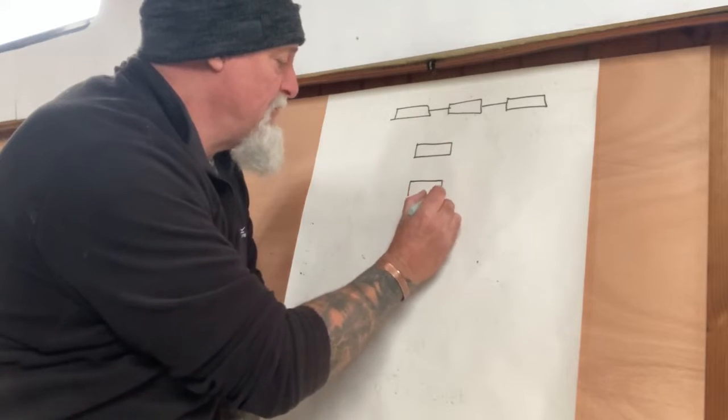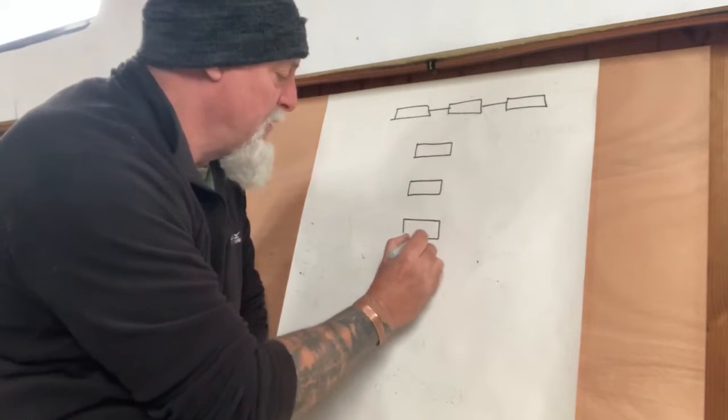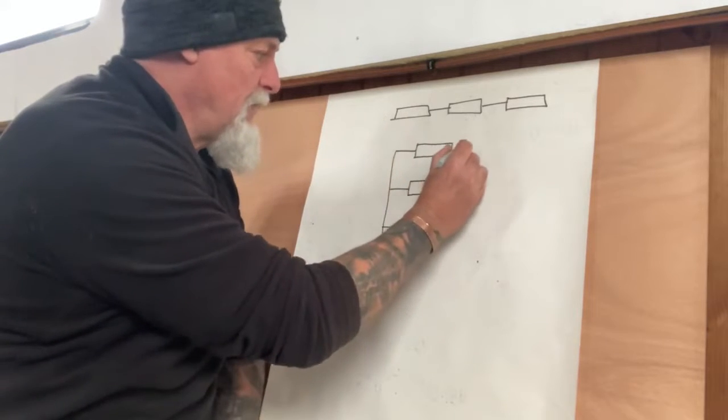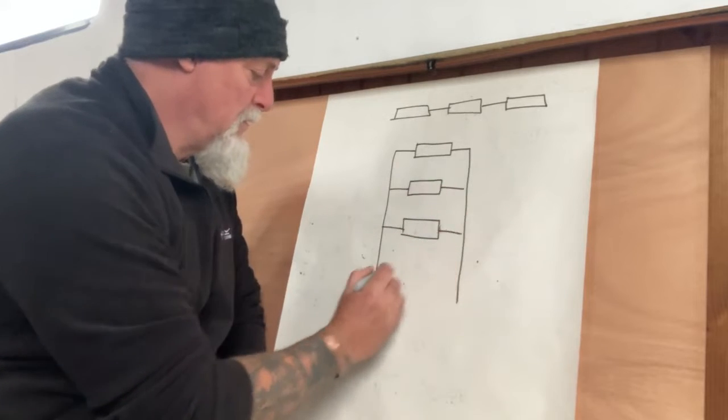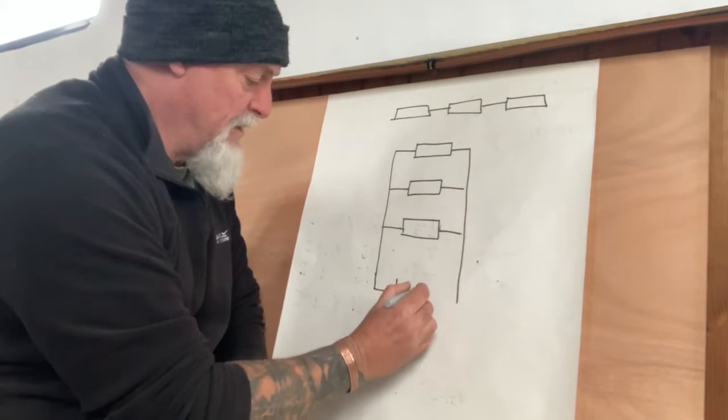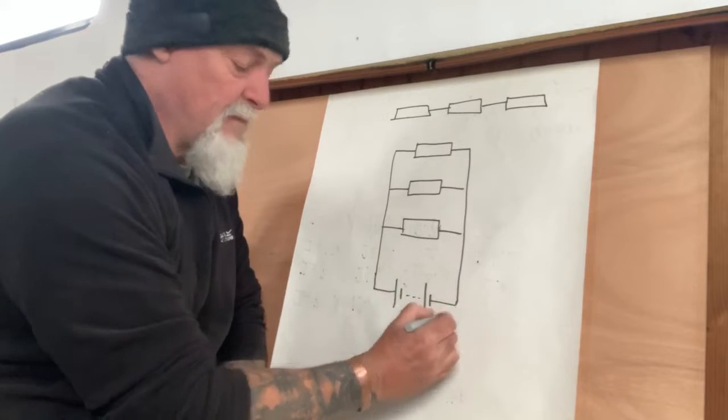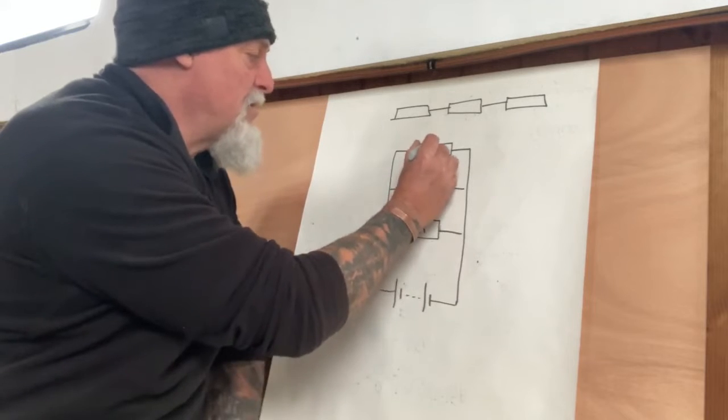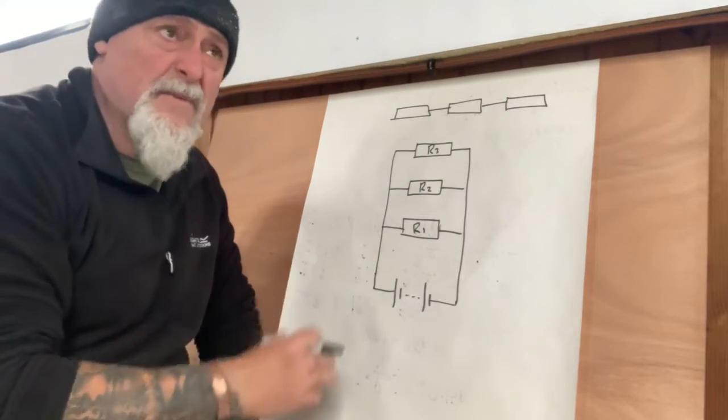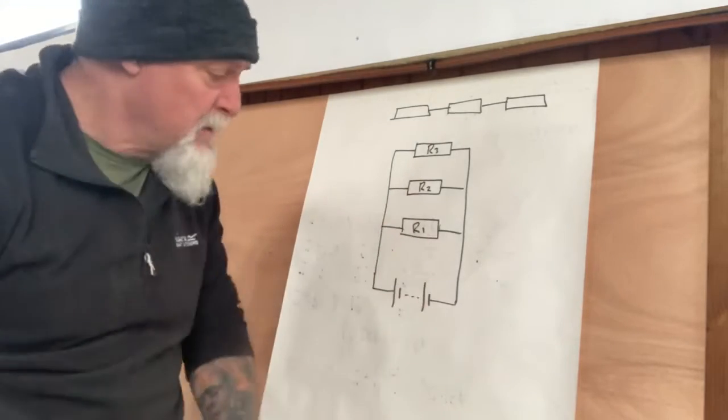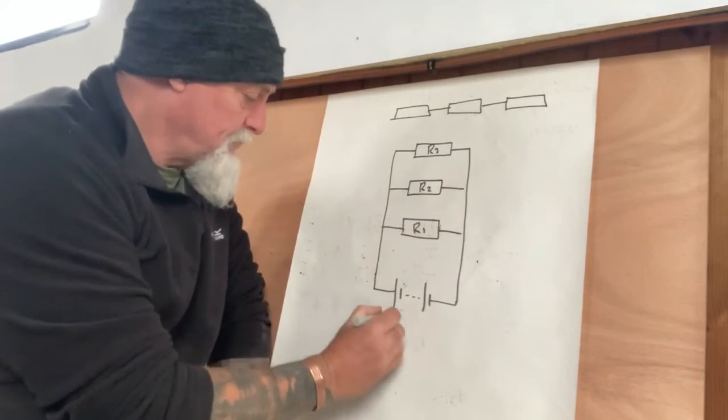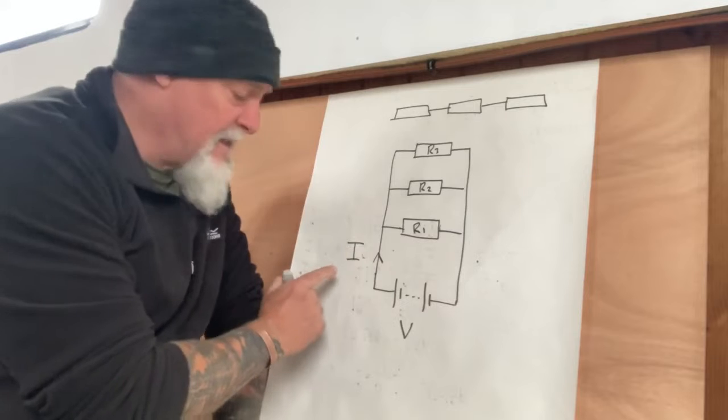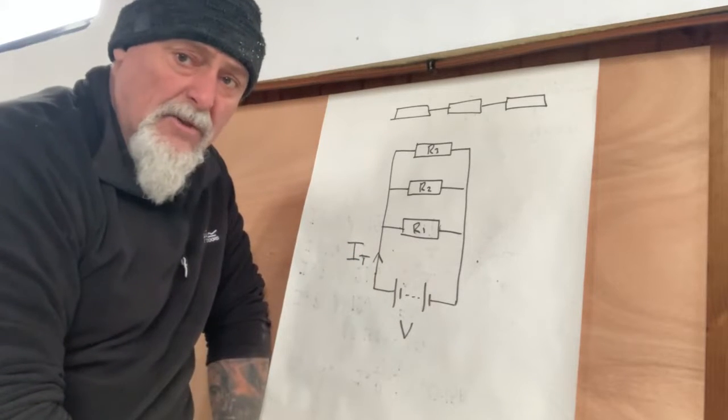I'm going to do three loads, three resistors like we have been doing, and they are wired in parallel to a supply. In this case, a multi-cell battery. So R1, R2, and R3. I'm using resistors, but they could be lamps or anything, any appliance.